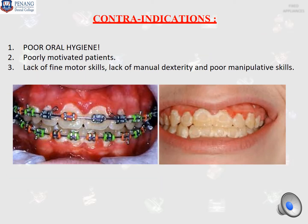However, in some cases, fixed appliances or braces are not the first choice of treatment. The first contraindication is poor oral hygiene. You can see in this photo there is a lot of food debris around the braces and the gums are swollen. Once we remove the braces, we can see a lot of white spots and decalcification at the labial surface of all teeth. This introduces more harm than benefit to the patient from the fixed appliance treatment.